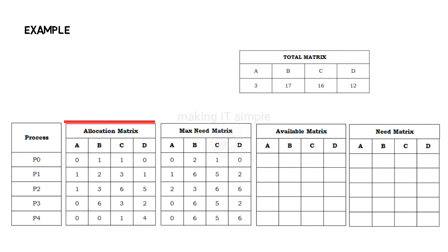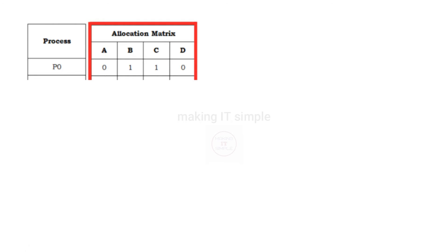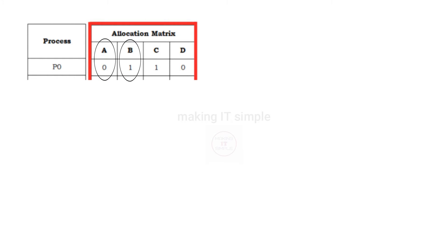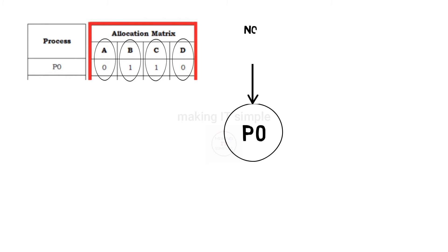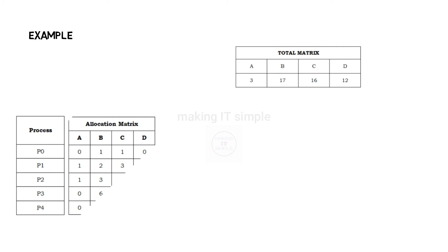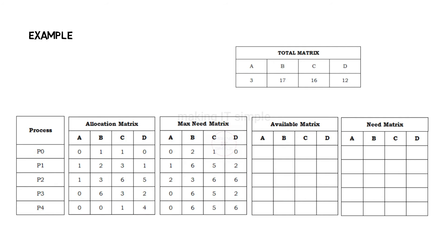This is the allocation matrix. At a certain point of time, the number of resources allocated to each process are defined here. For example, process P0 has no instance allocated of resource A, 1 instance of resource B, 1 instance of resource C, and no instance of resource D — that is, P0 has been allocated 0 hard disks, 1 printer, 1 scanner, and 0 pen drives.